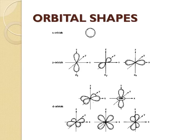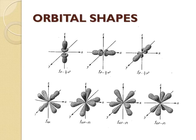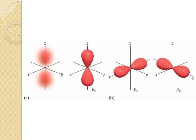Here's what the orbitals look like. S is a sphere shape. P is a dumbbell shape and has two lobes. D orbitals have four lobes, most of them anyway. F orbitals have a few with eight lobes — they're a more complex shape. When we look at the shapes of the orbitals, we're really looking at the surface within which an electron is found, rather than the electron cloud of higher probability.